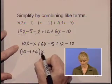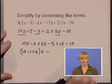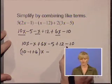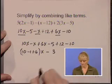We have our constants which we can simplify left to right. Negative 5 plus 12 minus 10 simplifies to 3.